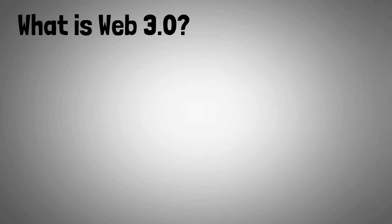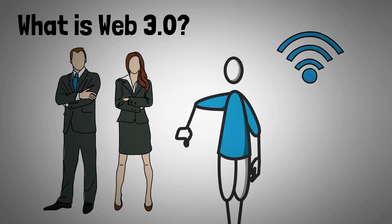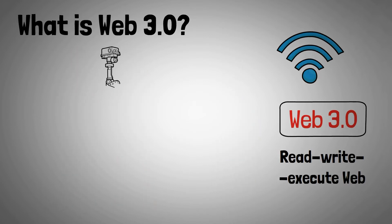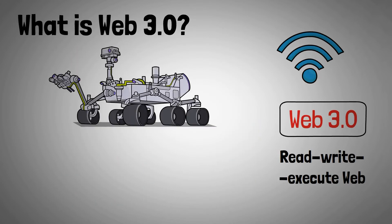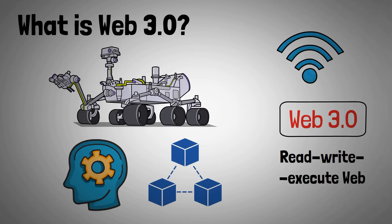Web 2.0's reliance on big tech companies is unacceptable to general users, ushering in a new era of the WWW known as Web 3.0. The Read-Write-Execute Web, also known as Web 3.0, introduces the concepts of machine learning, artificial intelligence, and blockchain systems.